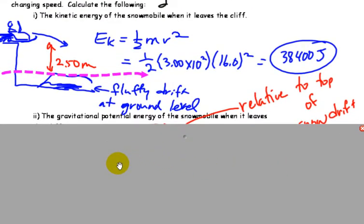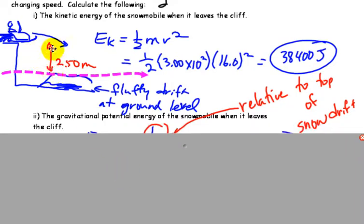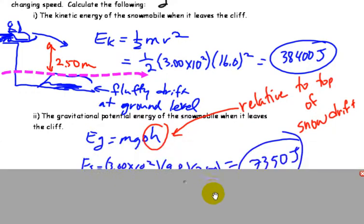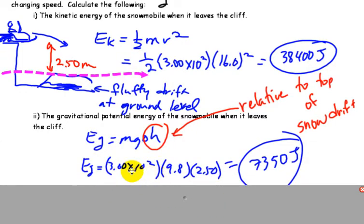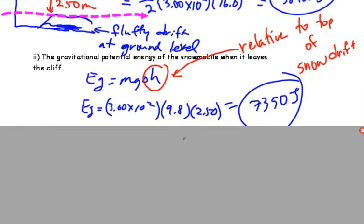The gravitational potential energy when the snowmobile leaves the cliff. So we're 2.5 meters above the snow drift, so that's our height there. So again, 300 kilograms multiplied by 9.8, multiplied by 2.5, 7,350 joules.